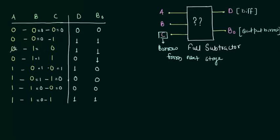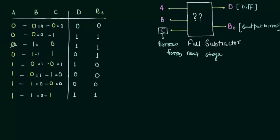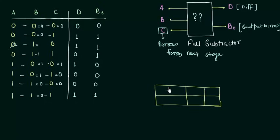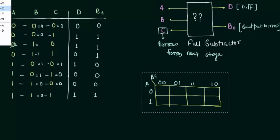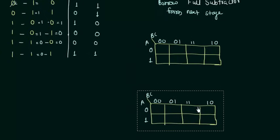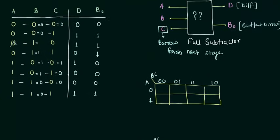We will now minimize functions D and BO using the Karnaugh map. Since we have eight possible combinations, we make an 8-cell, three-variable KMAP with inputs A, B, C, where A is the MSB and C is the LSB. The column headers are BC: 00, 01, 11, 10. We copy the same KMAP structure for BO to save time. The first KMAP is for the difference D.